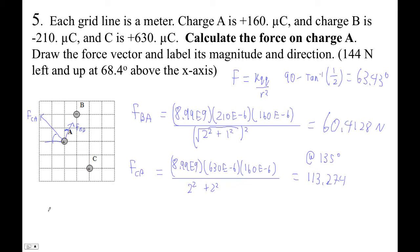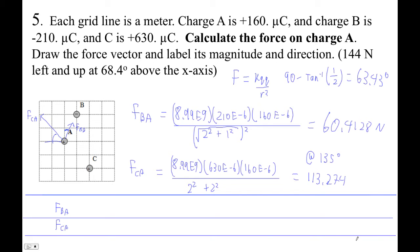Okay, so now we're set. Now we've got to fill in our little table here, right? Okay, so we're going to make a table. We're going to keep everything separated. Oh, look at that. Okay, so let's go, force FBA, force FCA. Where am I going to write the answer? I don't know, we'll figure this out. Okay, so let's see, magnitude, let's do the direction. Alright, so the magnitude of FBA is 60.4128. The magnitude of FCA is 113.274. These are Newtons. Alright, the direction of this guy is 63.43 degrees. Direction of this guy is 135 degrees, right?